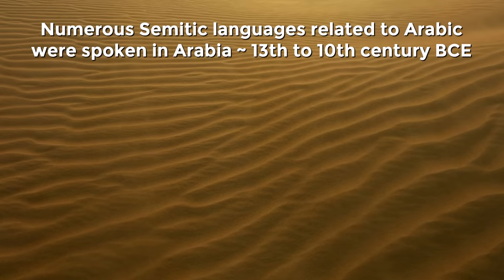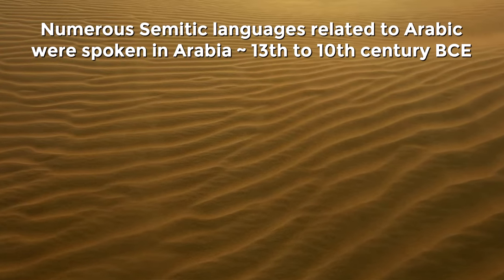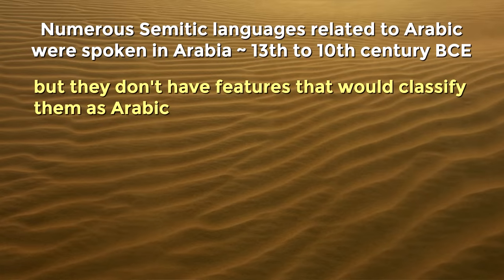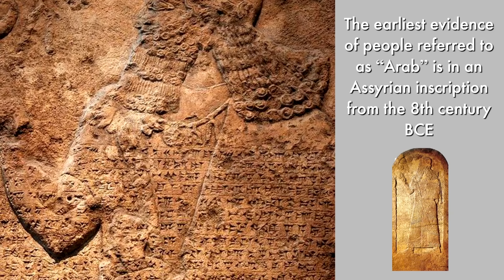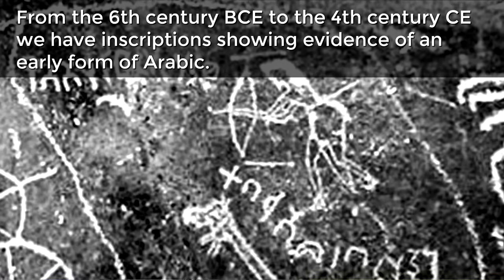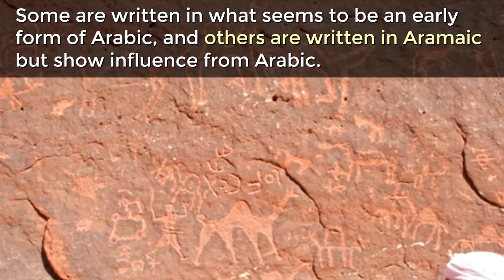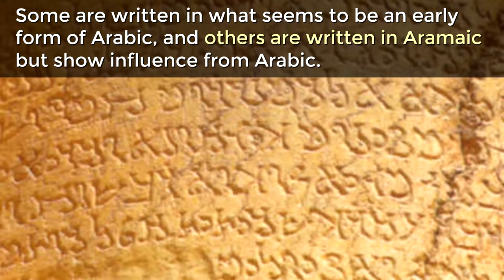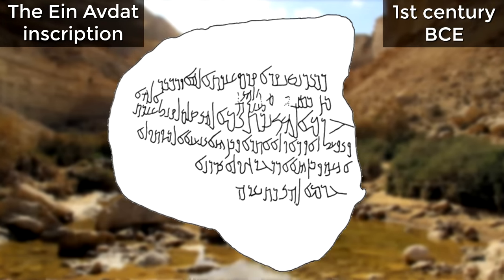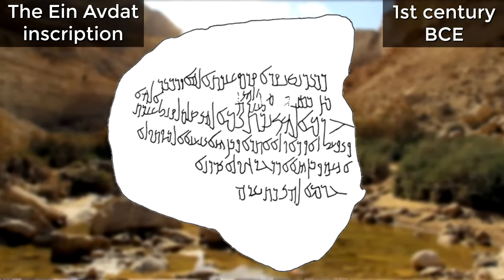Numerous Semitic languages related to Arabic were spoken in Arabia between the 13th and 10th century BCE, but they lack features that would classify them as Arabic. The earliest evidence of people referred to as Arab is in an Assyrian inscription from the 8th century BCE, though it doesn't give examples of their language. From the 6th century BCE to the 4th century CE, inscriptions show evidence of an early form of Arabic. The earliest inscription unmistakably in Arabic is from the 1st century BCE, found at Enavdat — an Aramaic inscription containing three lines of Arabic.